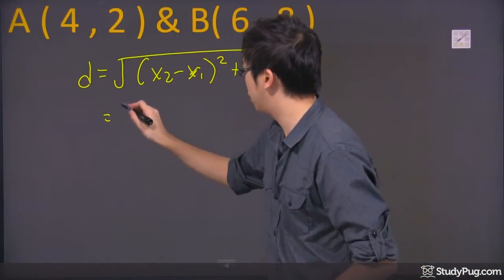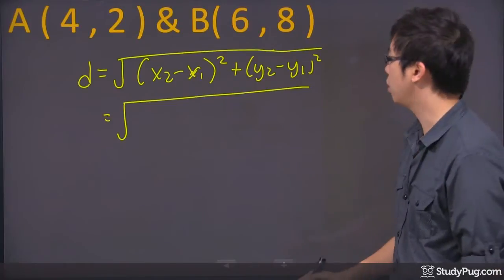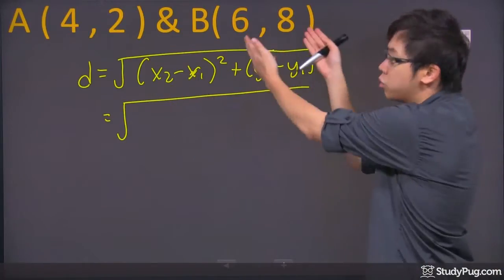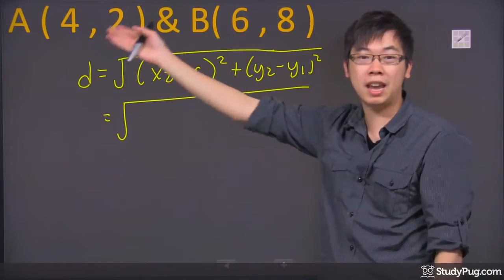What we're going to do is plug in the numbers. Remember, x2 and x1 are just point number 2 and point number 1. In this case, we have point B and A, so we can consider B as point 2.